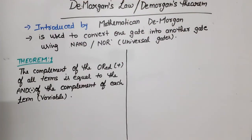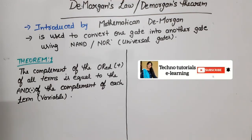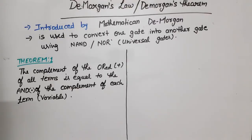Hello everyone. In this video lecture of digital electronics, I am going to discuss De Morgan's law or De Morgan's theorem. This was introduced by mathematician De Morgan, that's why it is called De Morgan's theorem. It is used in Boolean algebra to convert one gate into another gate. For converting one gate into another, we use NAND and NOR gates. These gates are called universal gates.